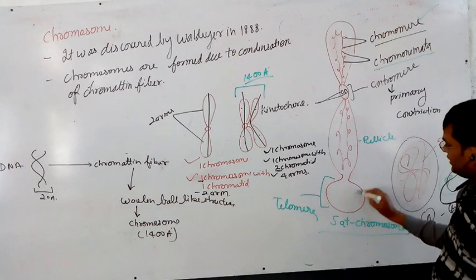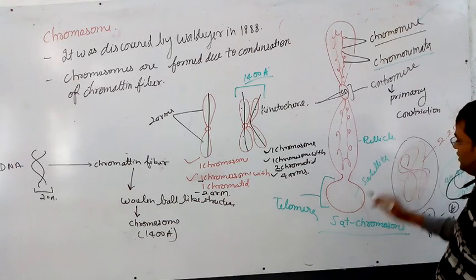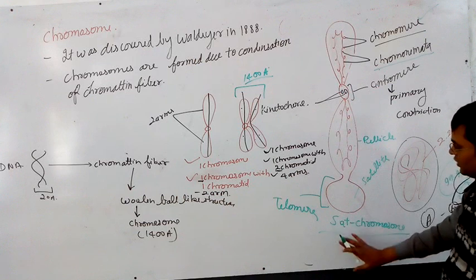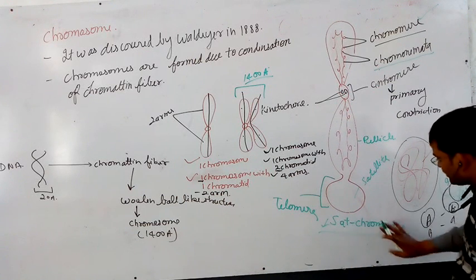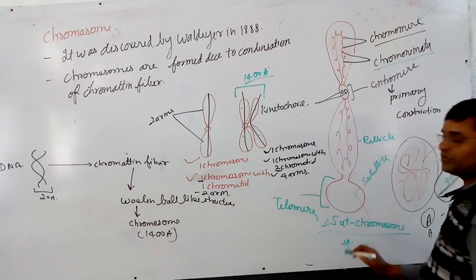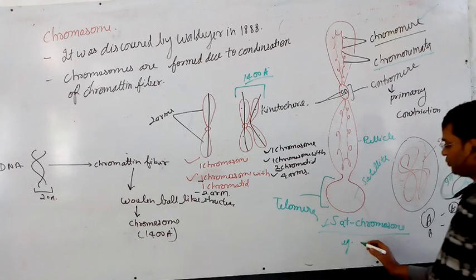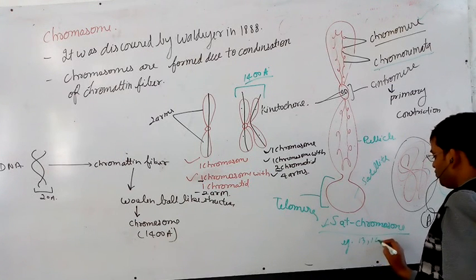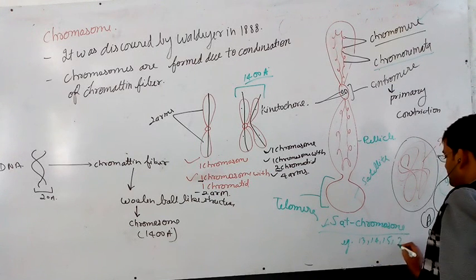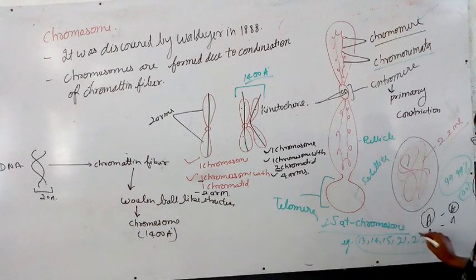This is the satellite, it is called satellite. How many chromosomes have the satellite form? The satellite form is four to five pairs. Pairs are 13, 14, 15, 21, and 22. These are all having satellite and therefore they are called satellite chromosomes.